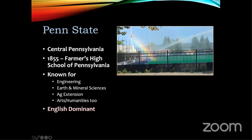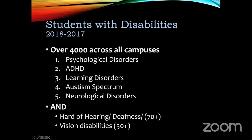I've been at Penn State for about 20 years. We're in central Pennsylvania — as opposed to Penn in Philadelphia — in a rural area. We started out as the Farmers High School for Pennsylvania, but now we're a much larger university with about 40,000 students on the campus where I work. Penn State is known for engineering, earth and mineral sciences, meteorology, agriculture, and ag extension, but we also have arts and humanities. We have around 4,000 students across different campuses with disabilities, the top five including psychological disorders and ADHD.